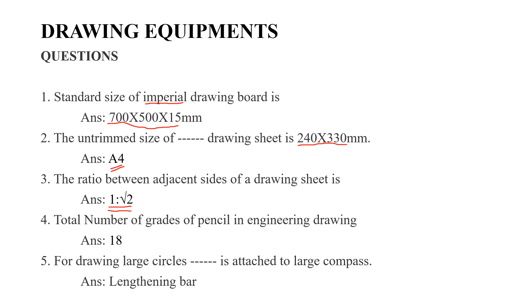Next question: Total number of grades of pencils in engineering drawing. Total number of grades of pencils is 18, that varies from 9H to 7B.